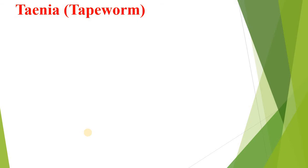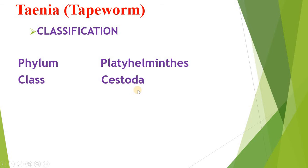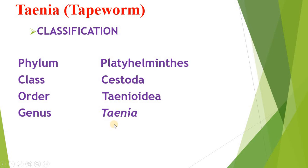Taenia tapeworm — first we will discuss about its classification. Phylum: Platyhelminthes. Class: Cestoda. Order: Taenioidea. Genus: Taenia. Species: Solium.